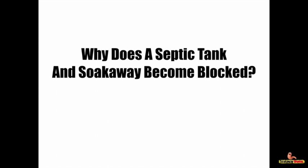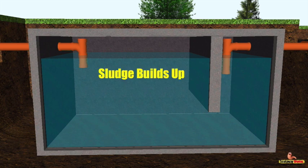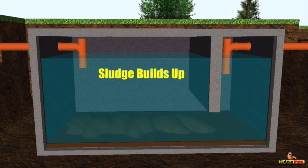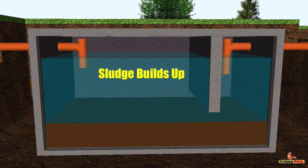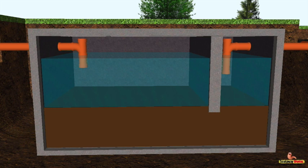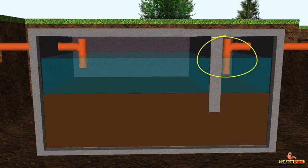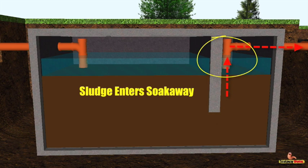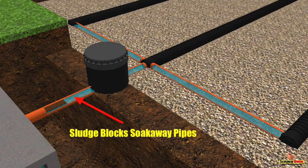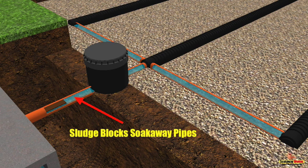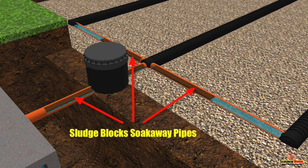Why does a septic tank and soak away become blocked? The biggest problem is sludge. The sludge is made up of fat and grease, and over time this sludge builds up from the bottom of the tank and rises upwards. In time, this sludge reaches the outlet pipe, and once it does so, the sludge makes its way from the septic tank towards the soak away pipes, starting to clog them up, blocking the wastewater and stopping it from flowing freely.